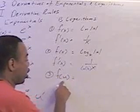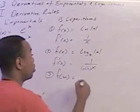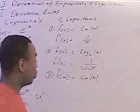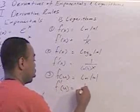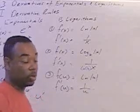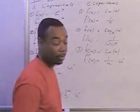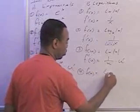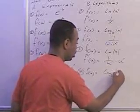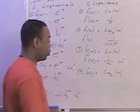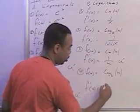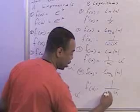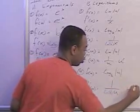Thirdly, if your function has a function as an input — say, natural log of the absolute value of a function u — then the derivative will again be 1 over u, but you'll also have to employ the chain rule, so 1 over u times u prime. And lastly, if you have a log of a general base taken of a function u, the derivative will be 1 over u, multiply the u in the denominator by natural log of b, and then times u prime for the chain rule.